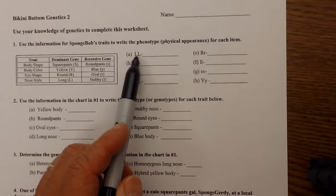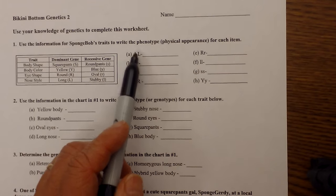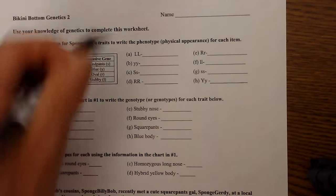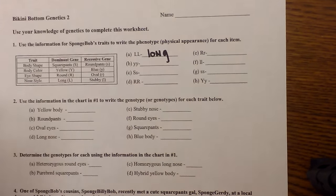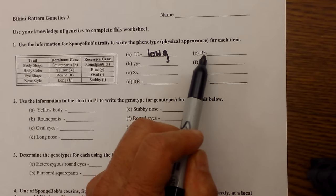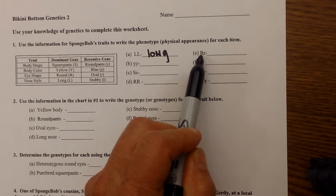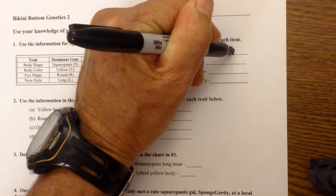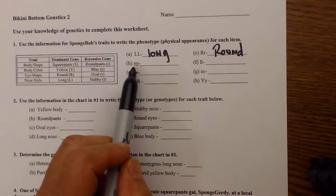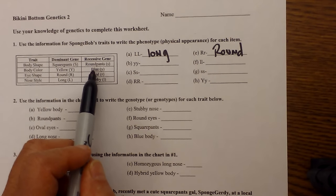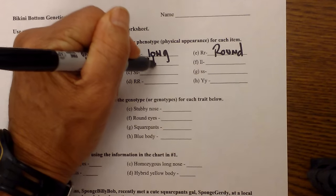So we have a homozygous genotype big L big L and we know that it's going to be dominant. So for nose style it's going to be a long nose. For this next one that is heterozygous capital letter lowercase letter, but it's still going to be the dominant trait because of the capital R. So the eye shape is going to be round. This one is also homozygous, but it's recessive homozygous. So the body color is going to be blue because blue is recessive.